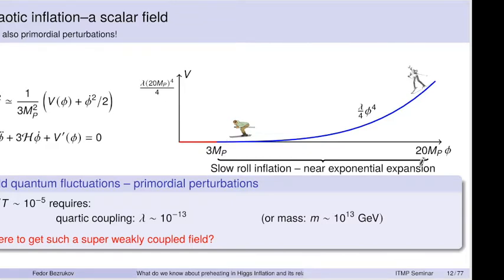This slow-roll period solves the horizon problem. At the same time, perturbations of the field on top of this background — being a quantum field — have quantum fluctuations which are generated. One can calculate how large perturbations are generated at each moment of time: at typically the Hubble scale they get generated, go outside the horizon, get frozen, and then give rise to the observed perturbations.